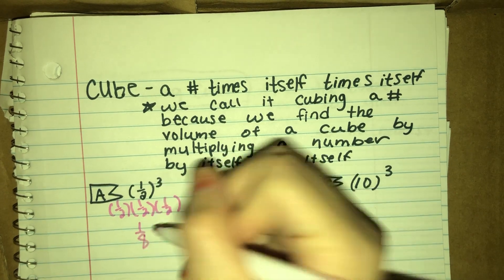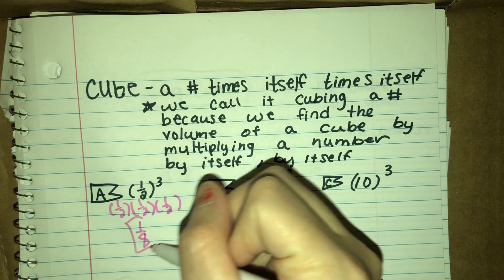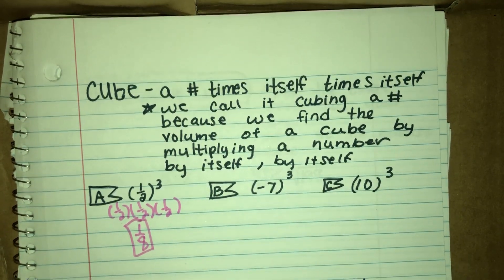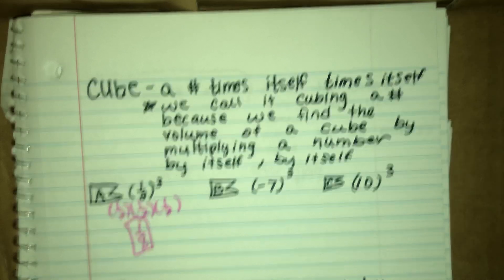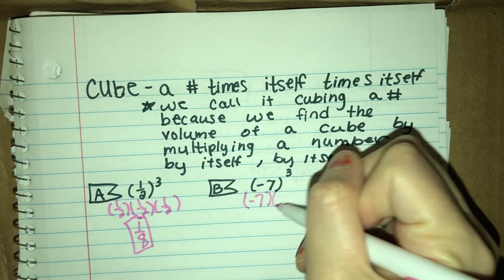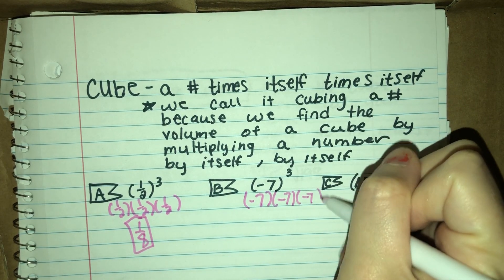So if you don't have a calculator at home, that's a good option for you. So here, the same thing, you could break it down and say that that means negative 7 times negative 7 times negative 7.